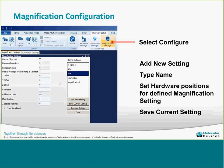Harbor settings are all the different hardware components you can control with preset values. For example, you can set an X, Y, and Z position value and call it 'Field of View 1,' then select it from a dropdown to go to that position automatically. Harbor settings are overarching above illumination and magnification — if you have the same components in both harbor settings and illumination settings, the harbor settings will override the illumination settings options.